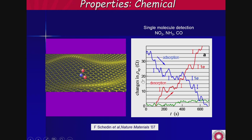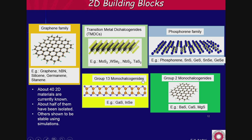One last property: graphene is sensitive to single molecules. If you measure the change in Hall resistance when you add sodium, ammonia, or carbon monoxide, every molecule that comes in gives a step in the resistance — so you can actually detect single molecules as very sensitive sensors. Also very important: graphene is completely impermeable. You can put a pressure gradient of one atmosphere of helium on a layer of graphene — not a single helium atom will go through, even though it's one monolayer thick. Since the discovery there have been many new two-dimensional materials discovered — about 40 of them — transition metal dichalcogenides, the phosphorene family, monochalcogenides, and others, each with different properties: superconducting, insulating, semiconducting.